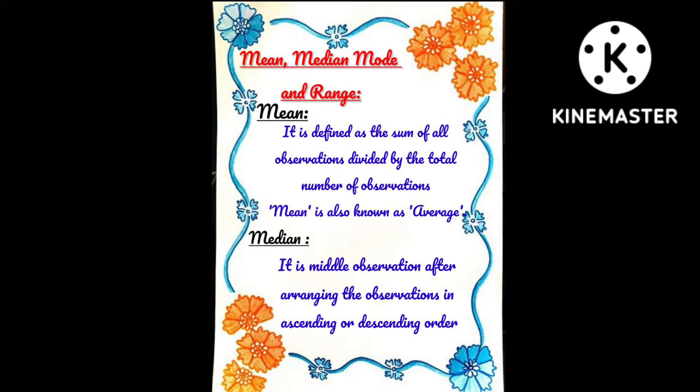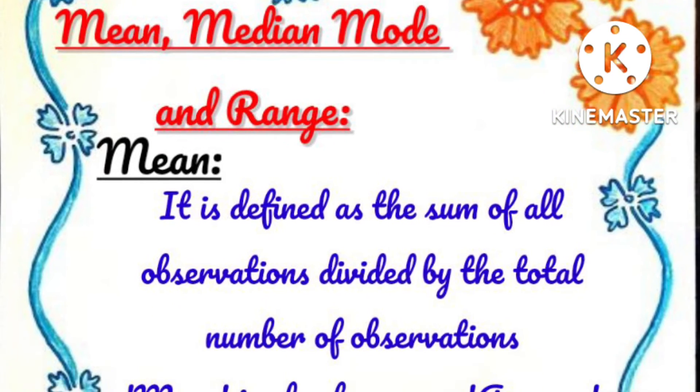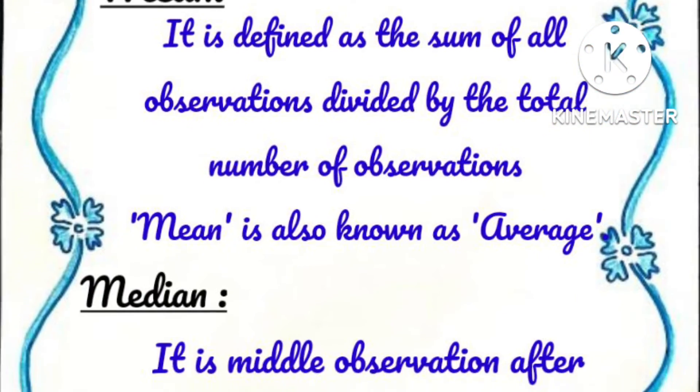The next one is median. It is the middle of the observation after arranging the observations in ascending or descending order.